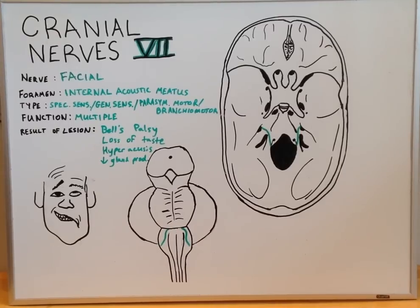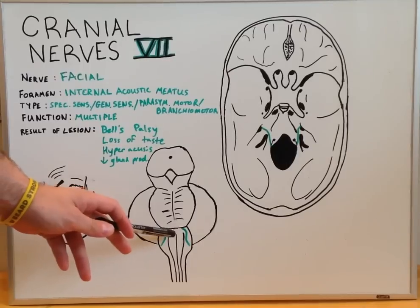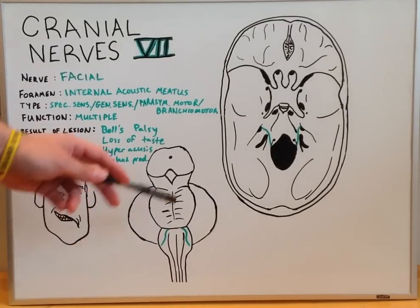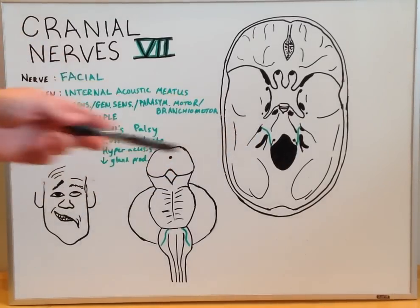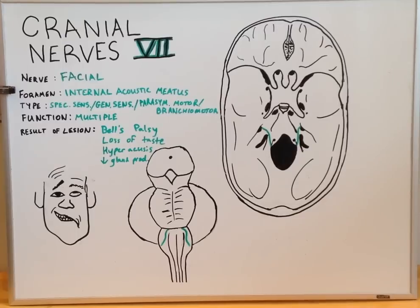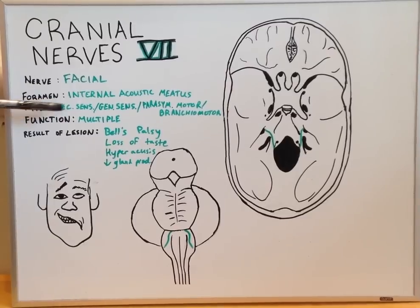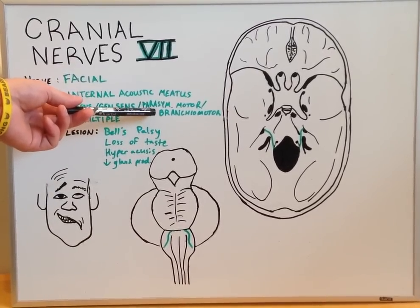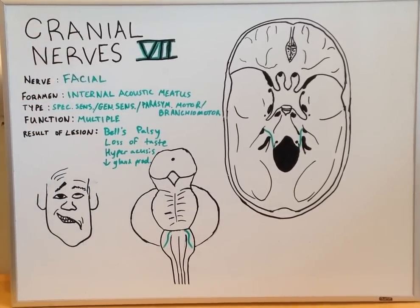The facial nerve begins at the pontomedullary junction, slightly lateral to the 6th cranial nerve, and continues anteriorly, passing inside the internal acoustic meatus. It has multiple fiber types: special sensory, general sensory, parasympathetic motor, as well as branchial motor fibers, which we will go through on another diagram.